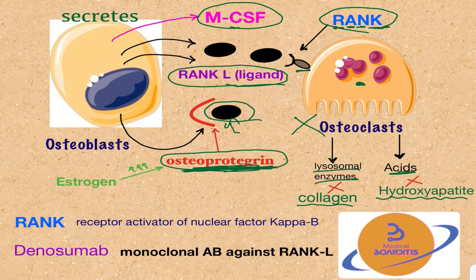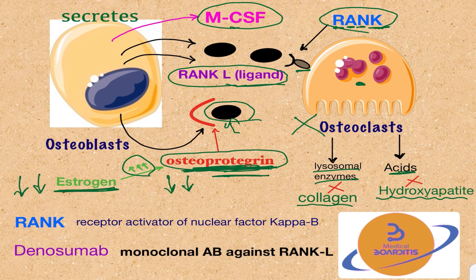Osteoprotegerin is upregulated by estrogen, which ensures there is enough osteoprotegerin to prevent bone breakdown. That is why in postmenopausal women, when estrogen levels are lower, the amount of osteoprotegerin is also reduced. This results in excessive bone resorption compared to new bone formation, causing the bone weakening or osteoporosis experienced by postmenopausal women.